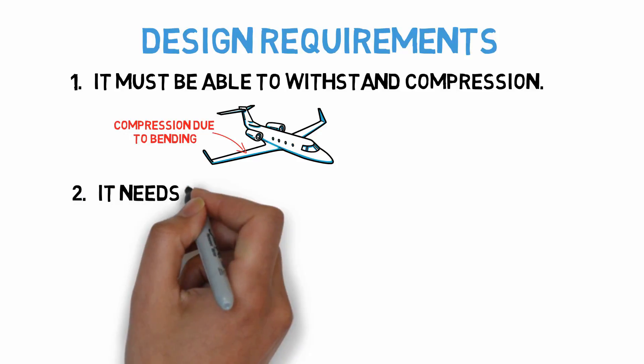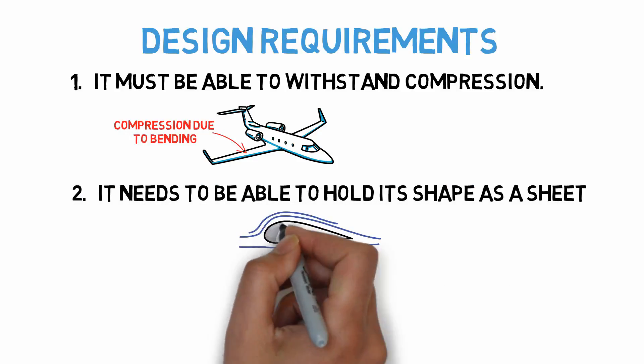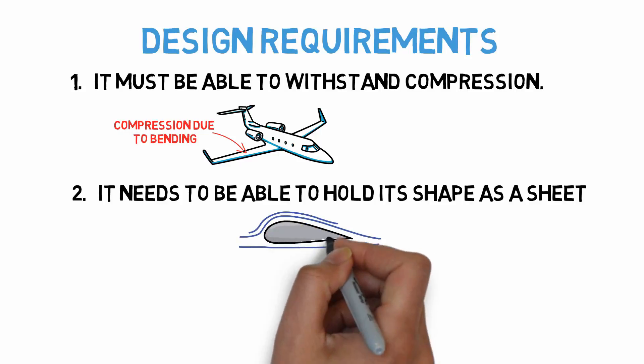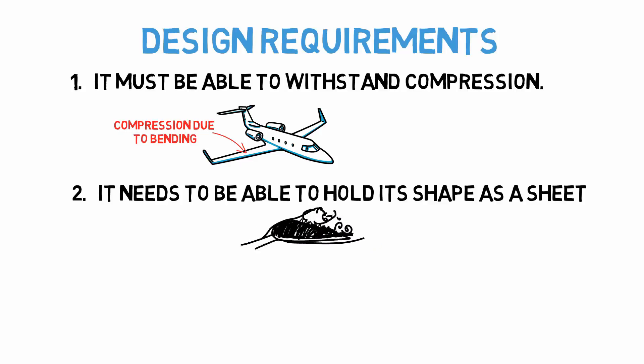Two, it needs to be able to hold its shape as a sheet. We want it to be able to handle loads but also not to deform significantly under them. If it does, it could affect the aerodynamic profile of the wing, among other things.